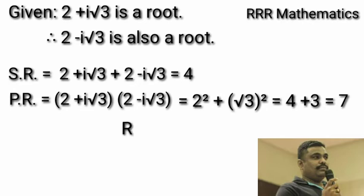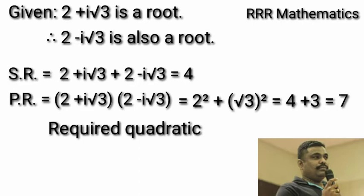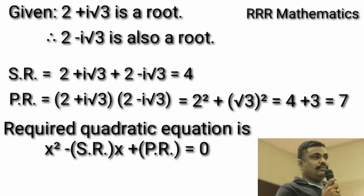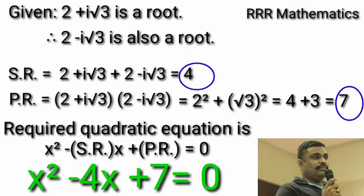Therefore, the required quadratic equation is x square minus sum of the root into x plus product of the root equal to 0. In this case, sum of the root is 4 and product of the root is 7. When you substitute, you will get the required equation as x square minus 4x plus 7 equal to 0.